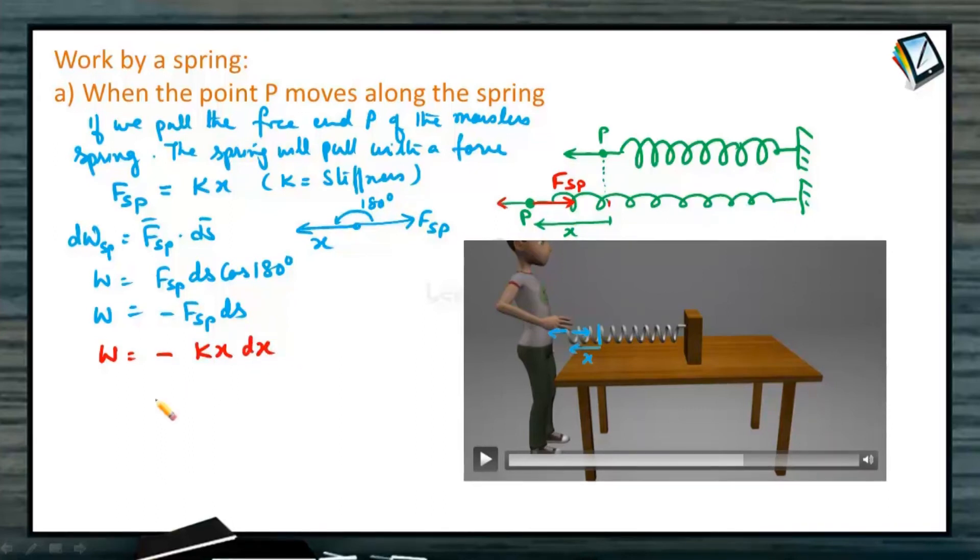This is the work done. We know the spring force, we can substitute the value. So W is equal to the spring force Kx. Now dS displacement is very small displacement along x direction. Let me call that as dx. So initial xi, let me call this as initial point, x final is the final position. kx dx, so we can write this as minus half of k x final square minus x initial square.